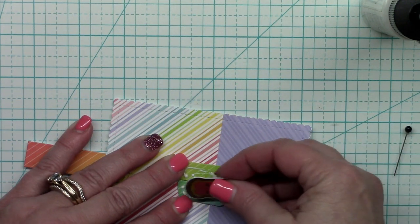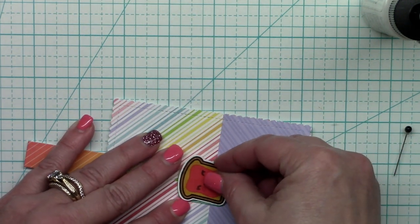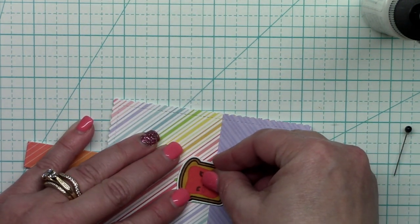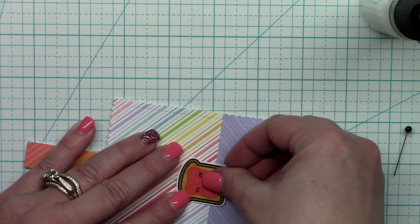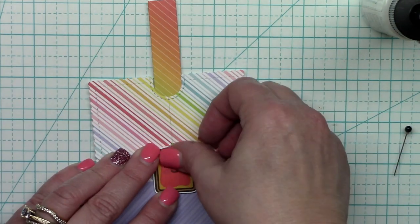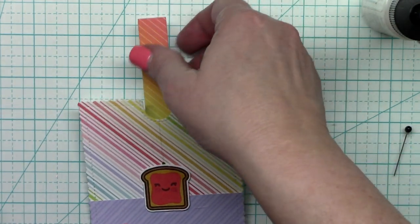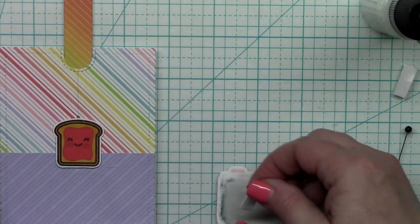So here is that little toast piece. I'm going to secure that with some glue and making sure that I only put that glue on those folded tabs and nowhere else. And now when I pull up the toast comes up with it.